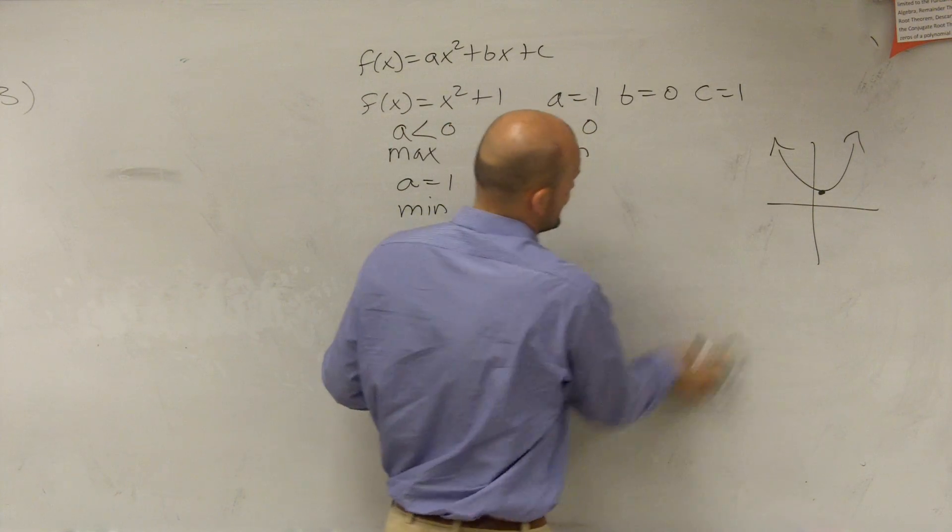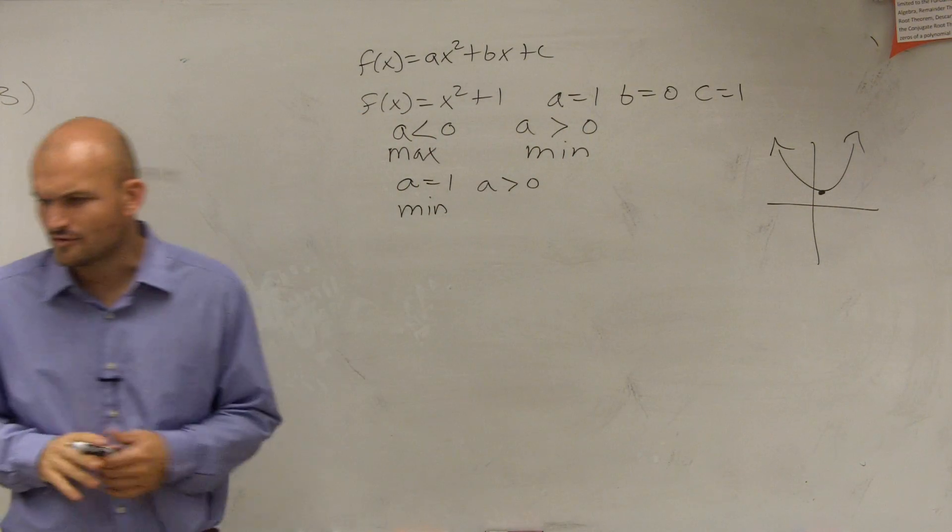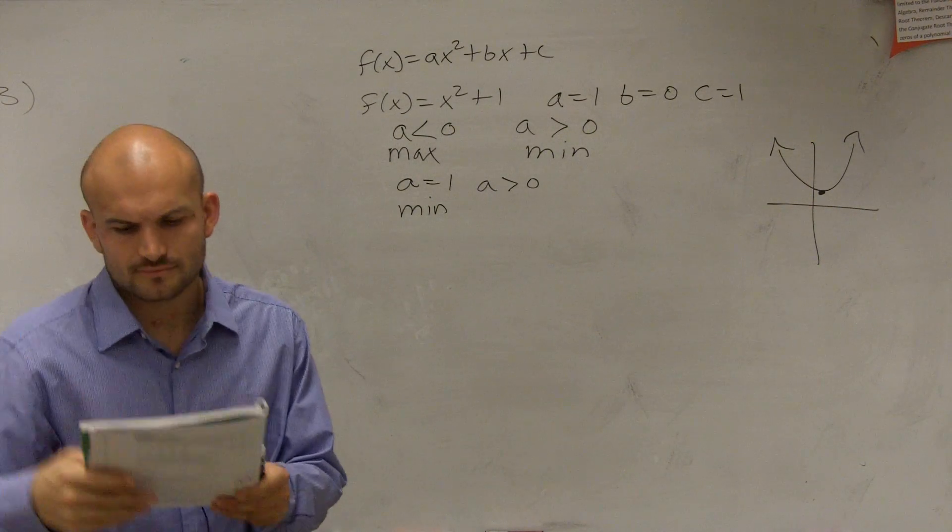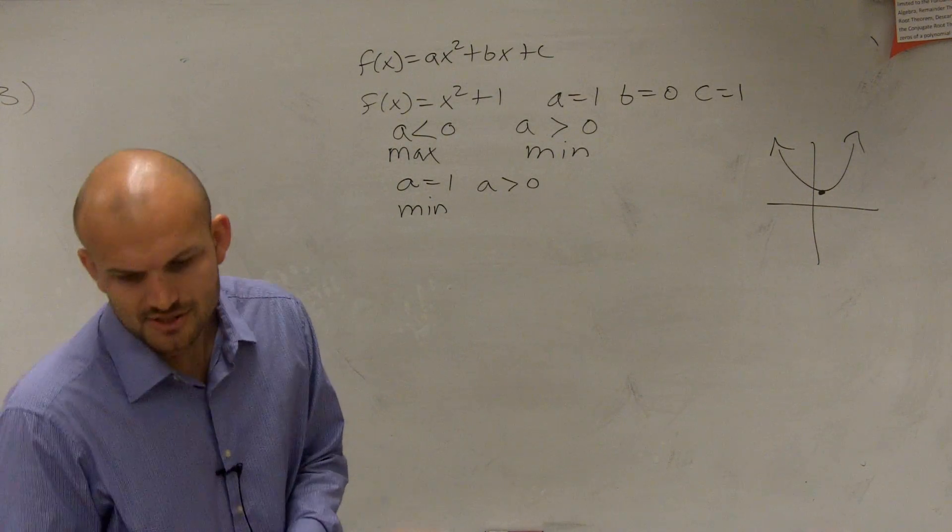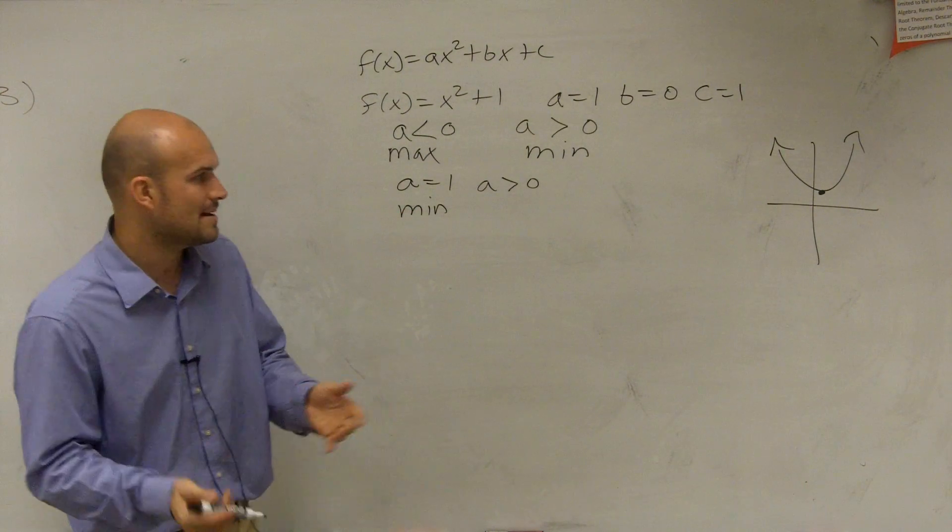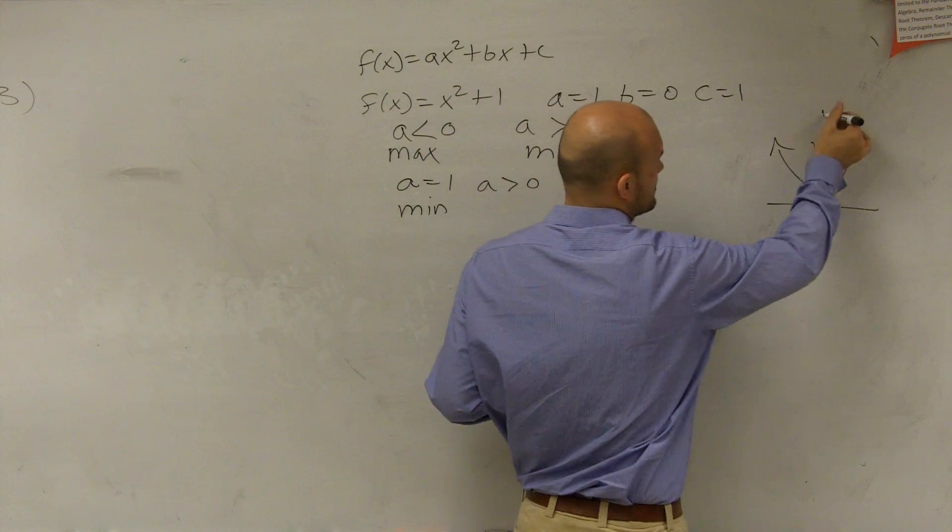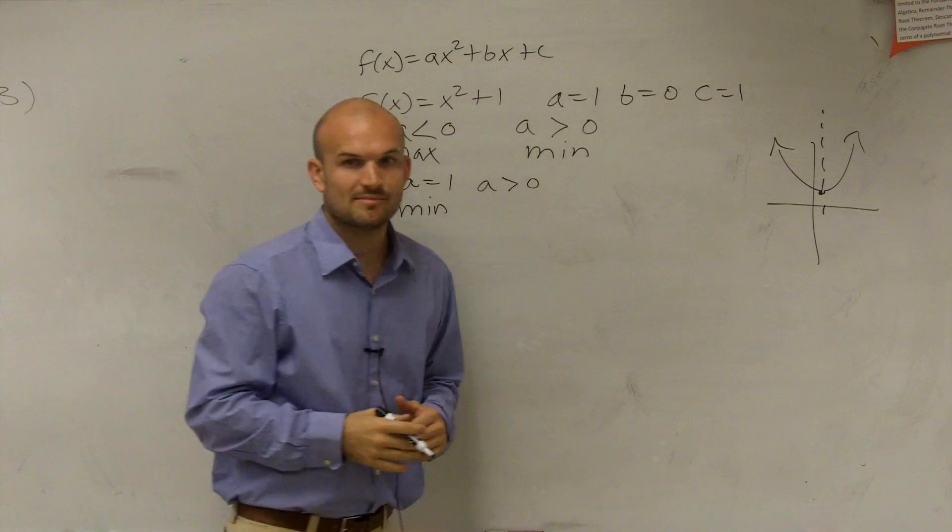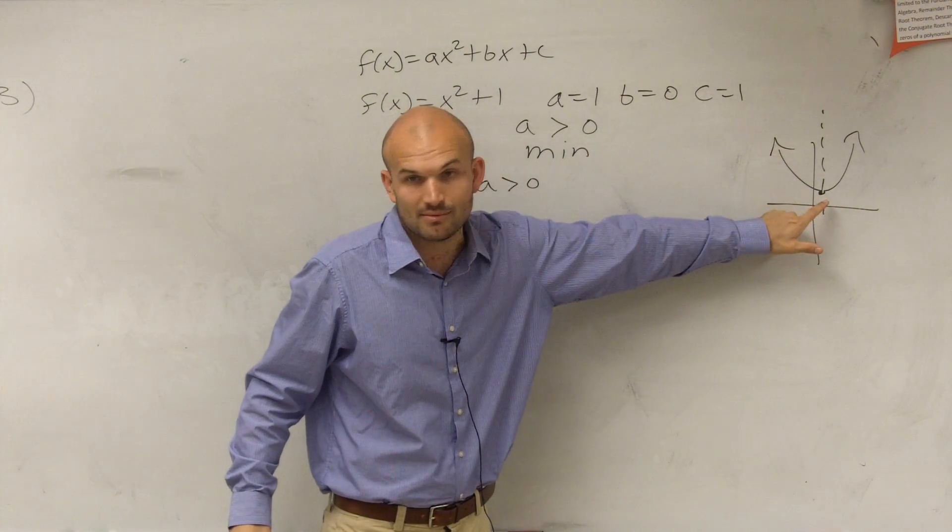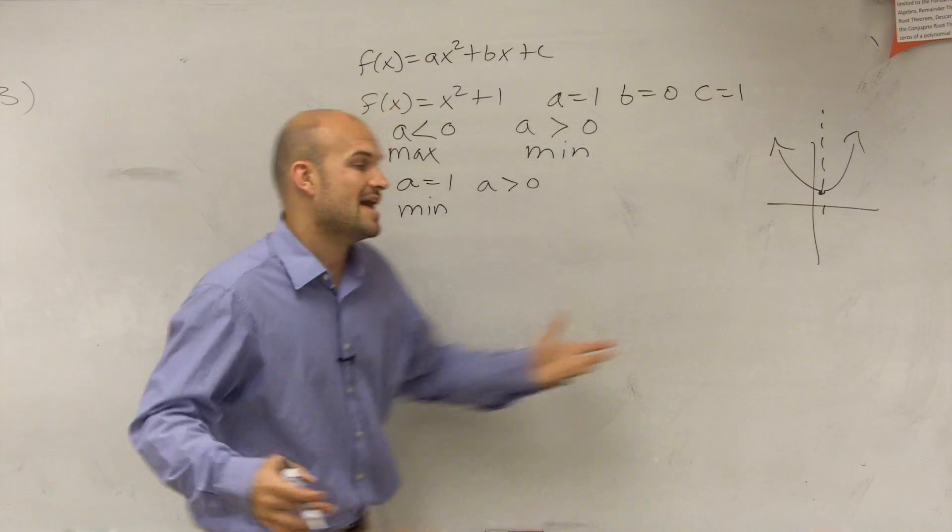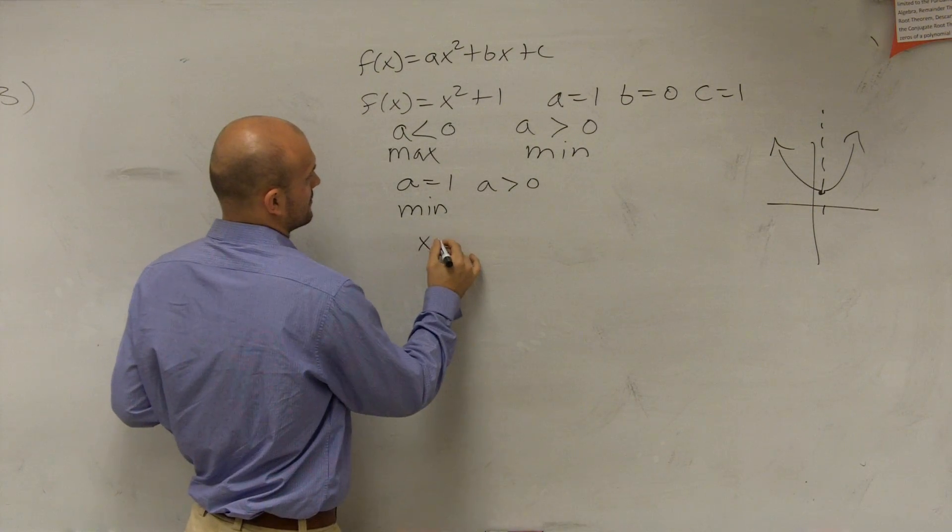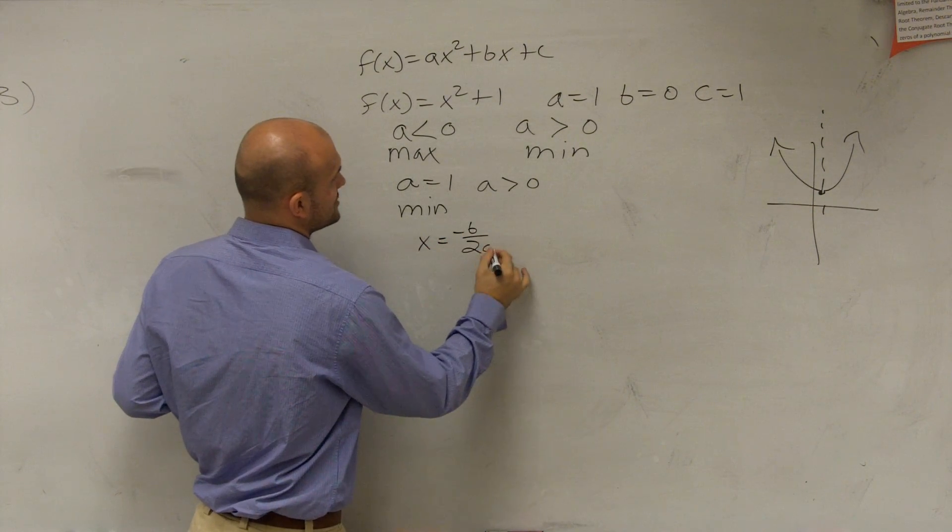So now the next thing they ask us to do is to find the vertex. So now we need to find that value. So how do you find that value? Well, ladies and gentlemen, remember, all parabolas have an axis of symmetry. So I know that the x value of this vertex, this is your minimum value, is going to be opposite of b divided by 2 times a.